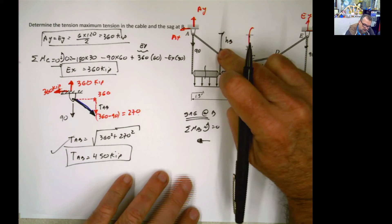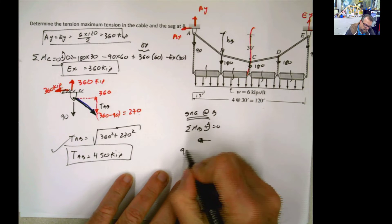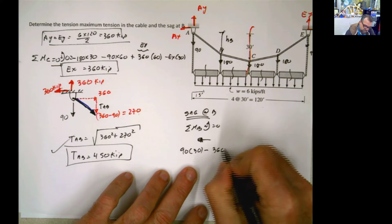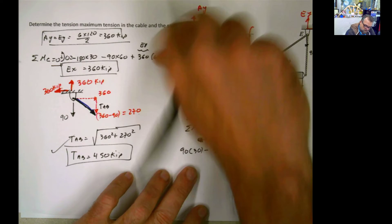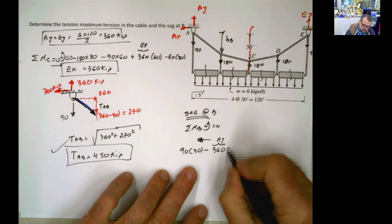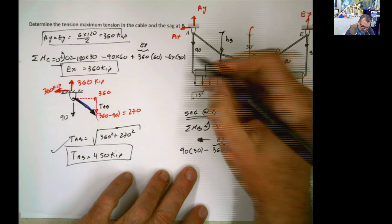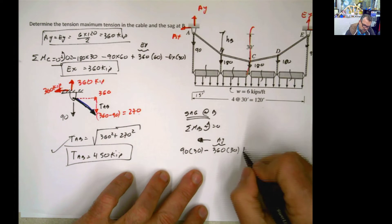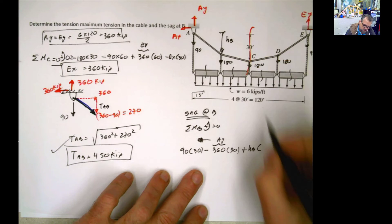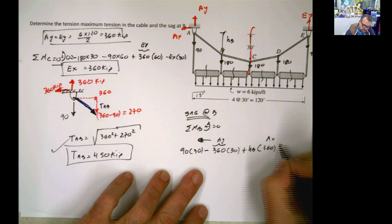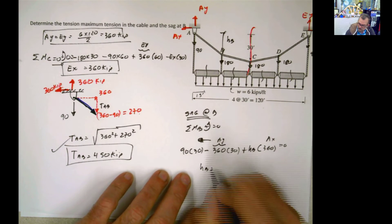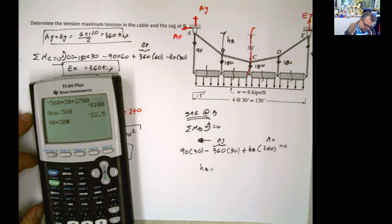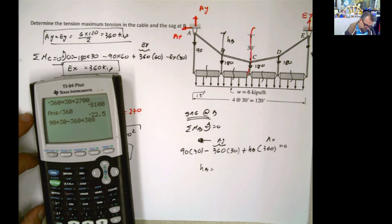And I'm going to use the left side this time for that. So what do you do if you do moment here and you use the left side? You have positive 90 times 30 minus Ay, which is 360, times the same 30. You could even combine those. Combine these two into only one. But I wanted to keep them separate for you to see what happens. Plus HB multiplied by Ax, which is also 360. And that has to be 0. And then you solve for HB.